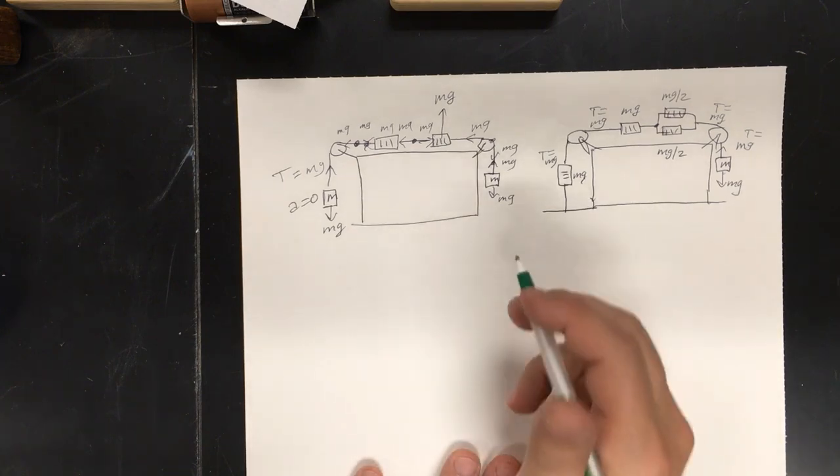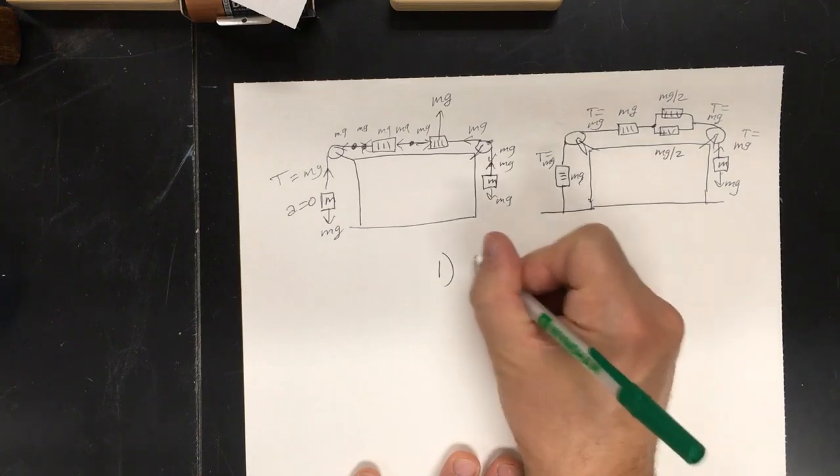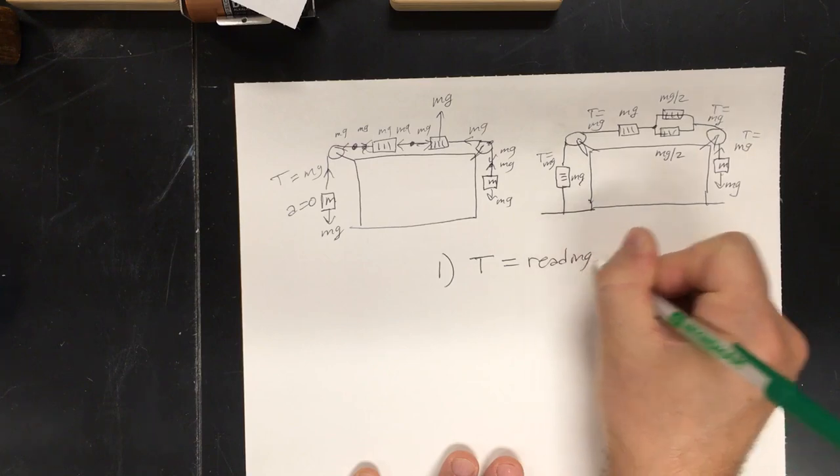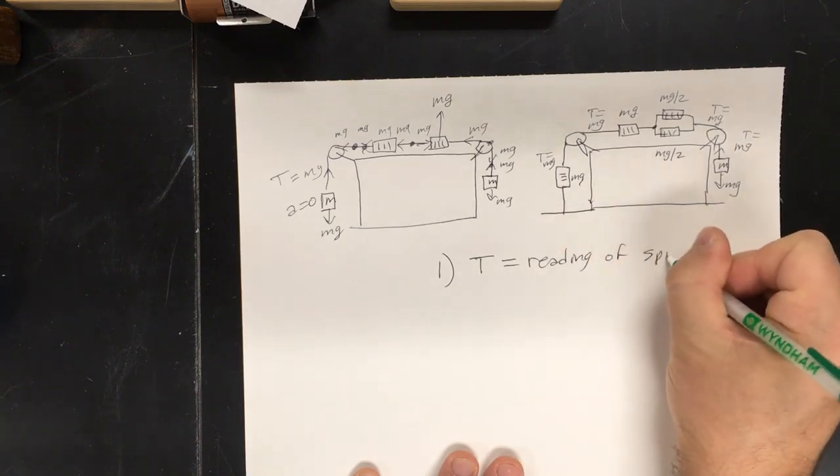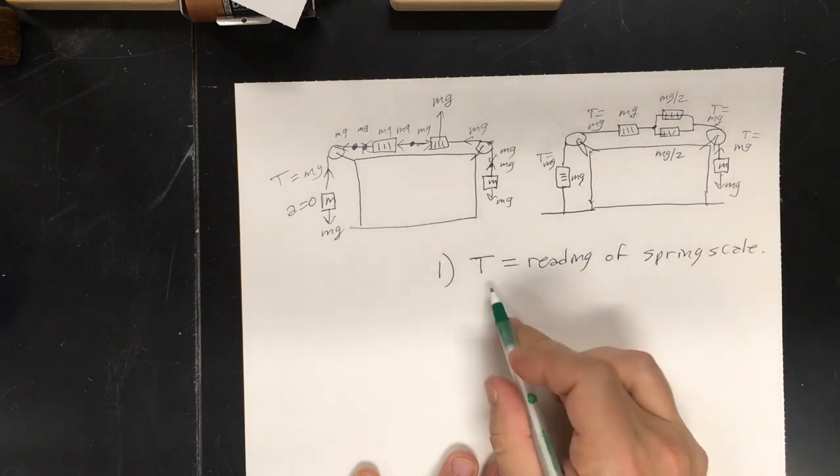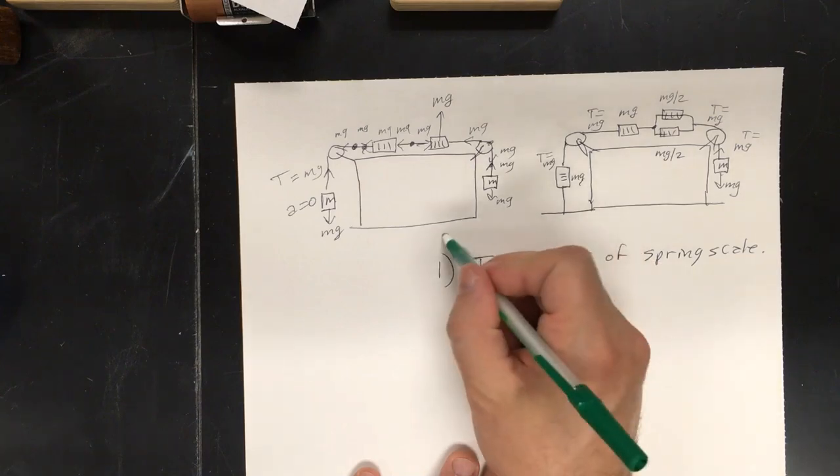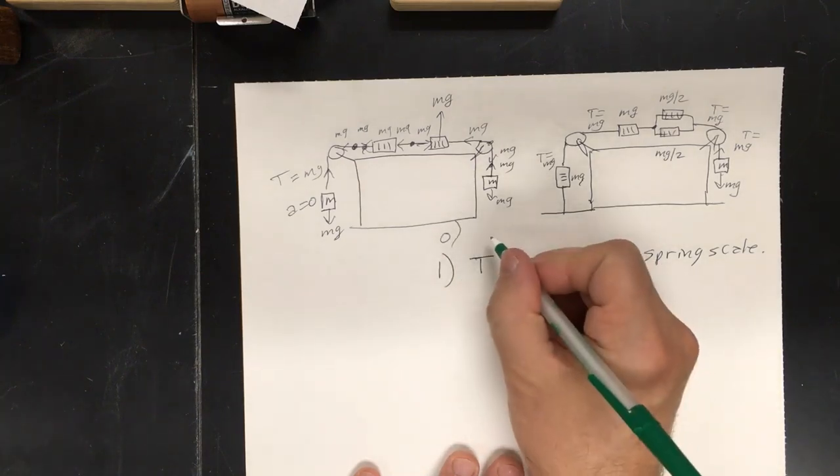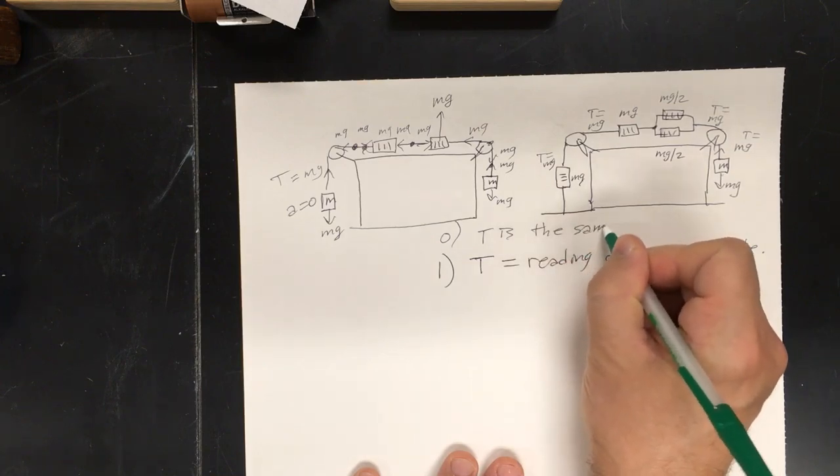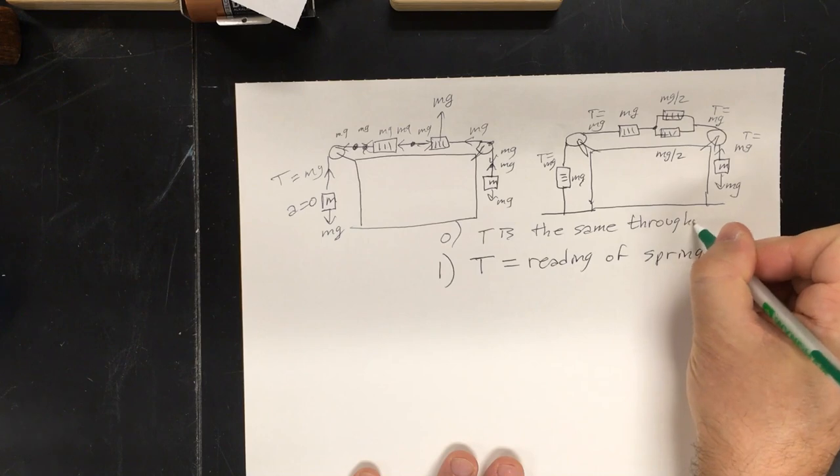So, here's the trick. One, the tension equals the reading of the spring scale. Pretend the spring scale isn't there. Whatever the tension in the rope has to be, that's the reading of the spring scale. Now, I guess I should have said zero, just like the laws of thermodynamics will go backwards.